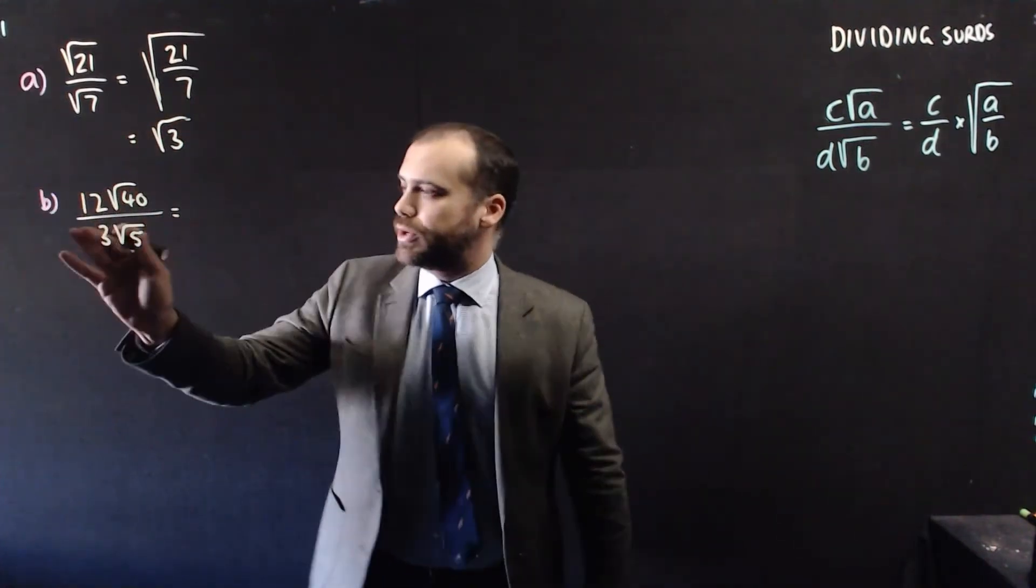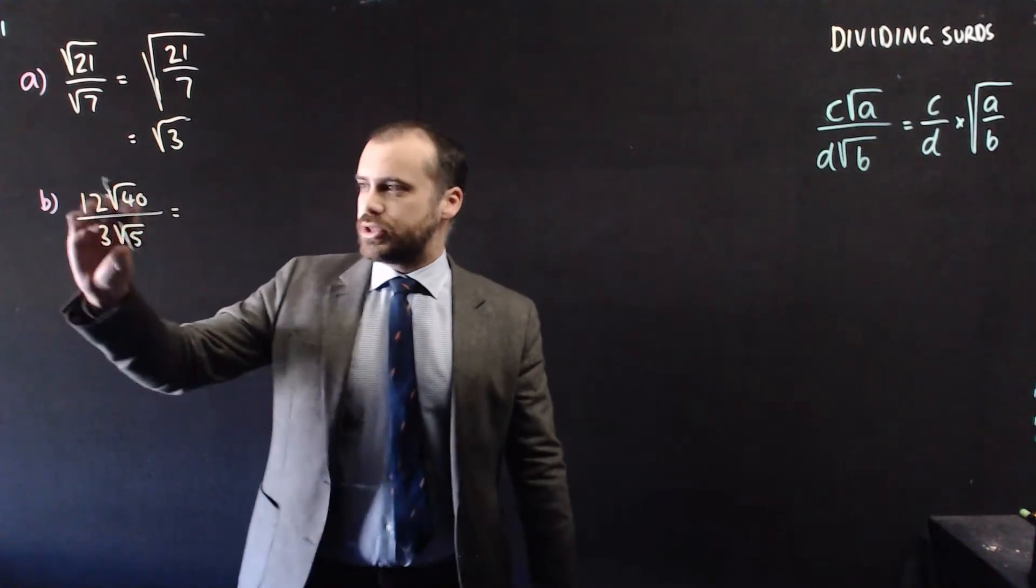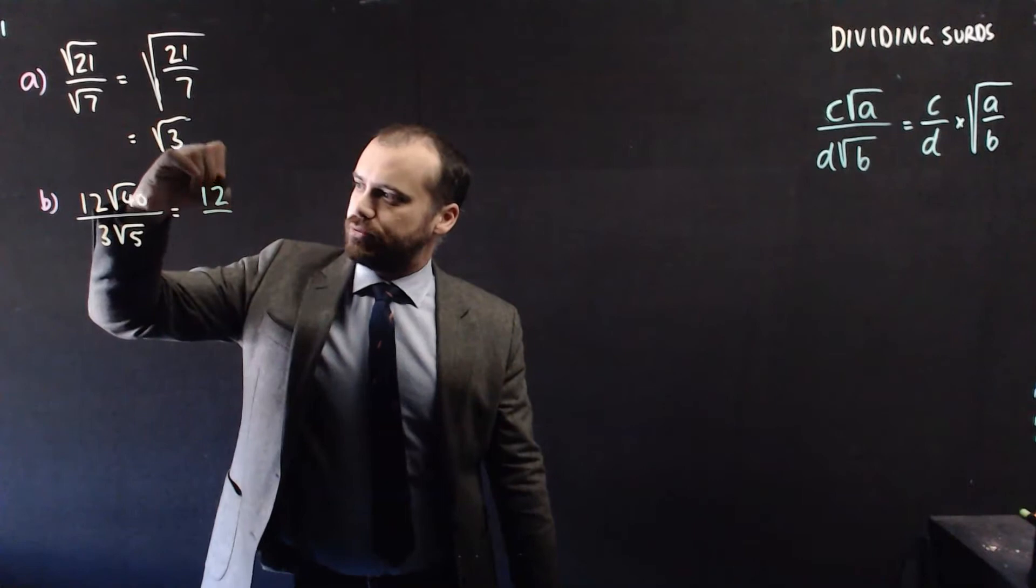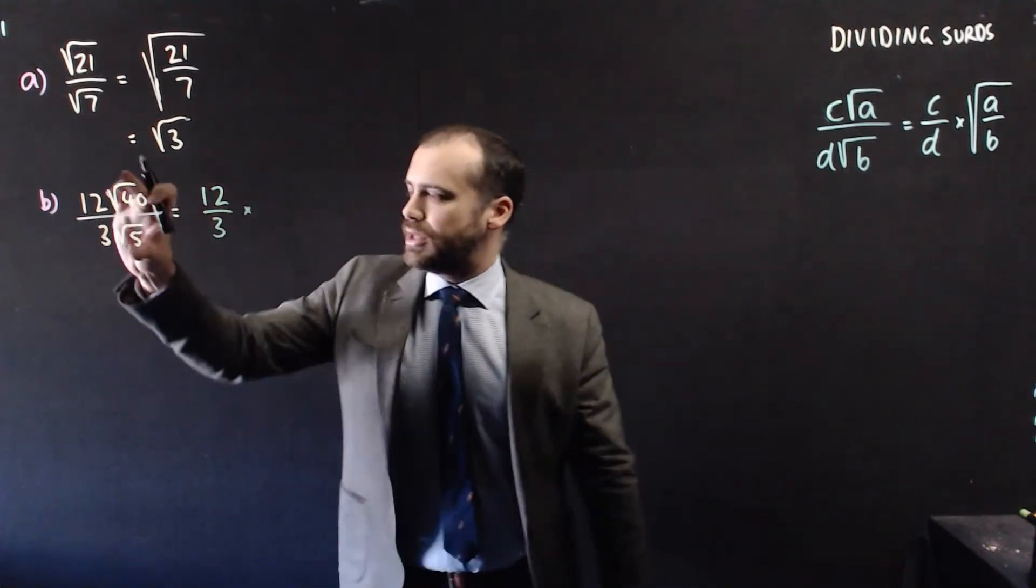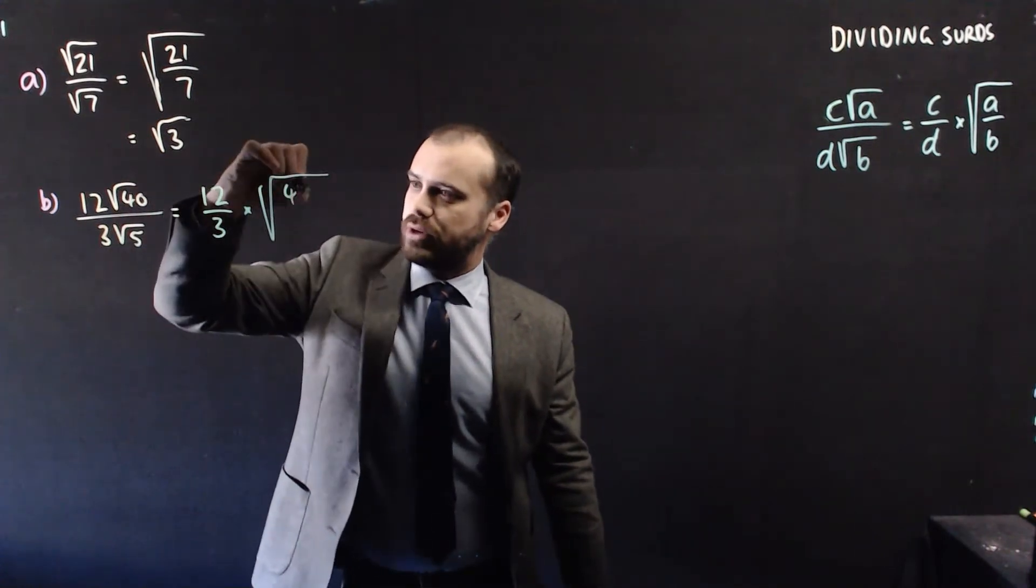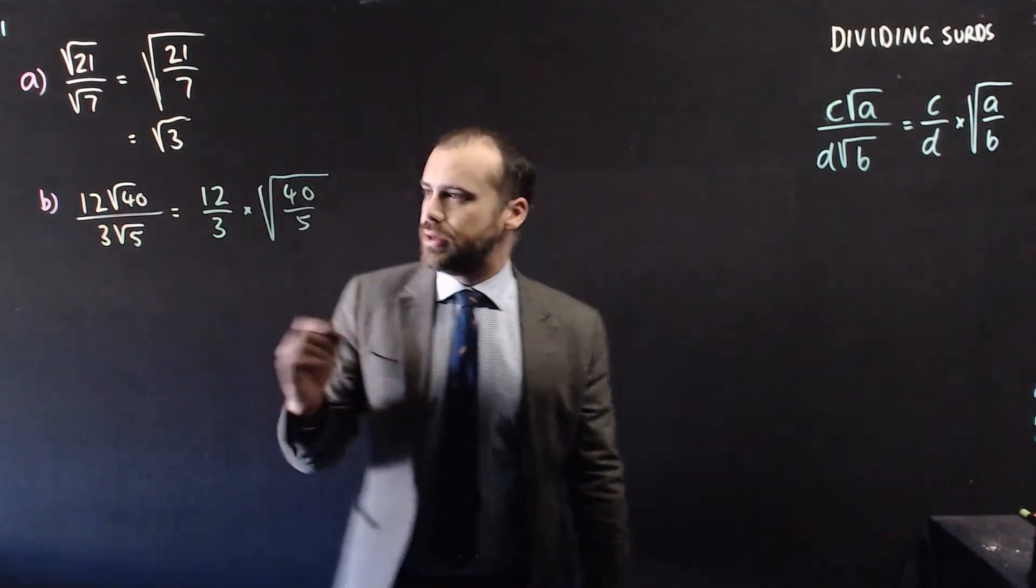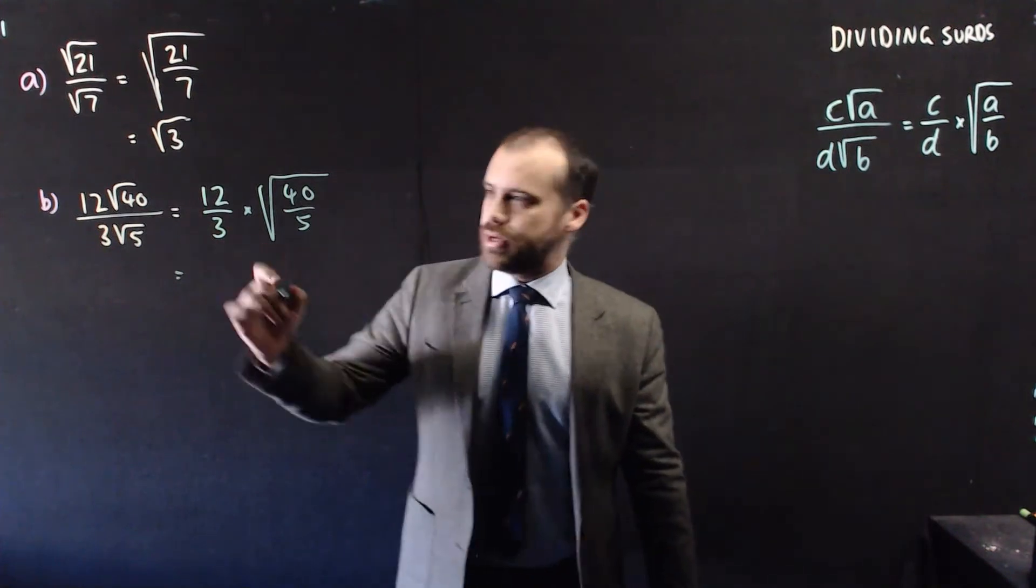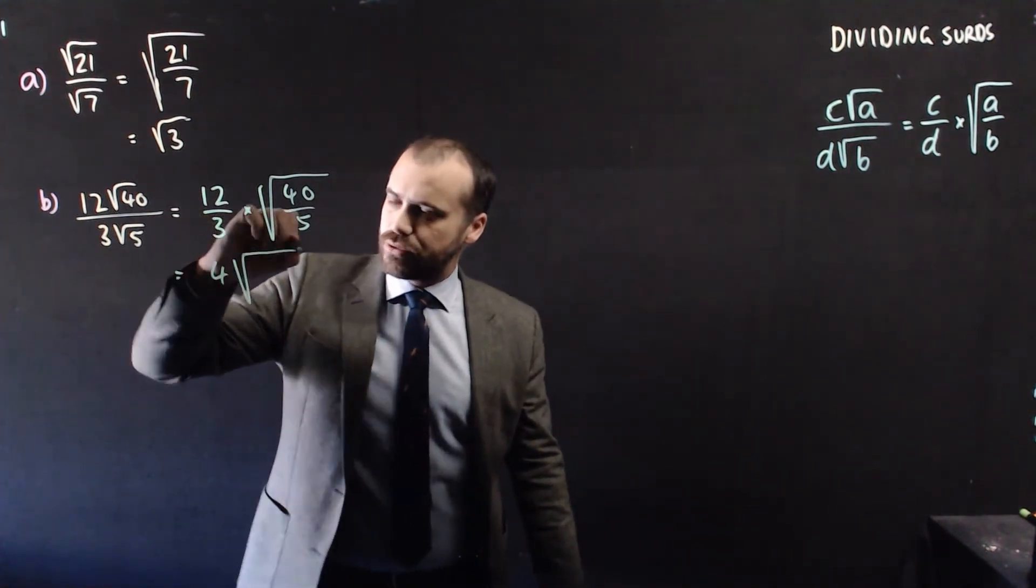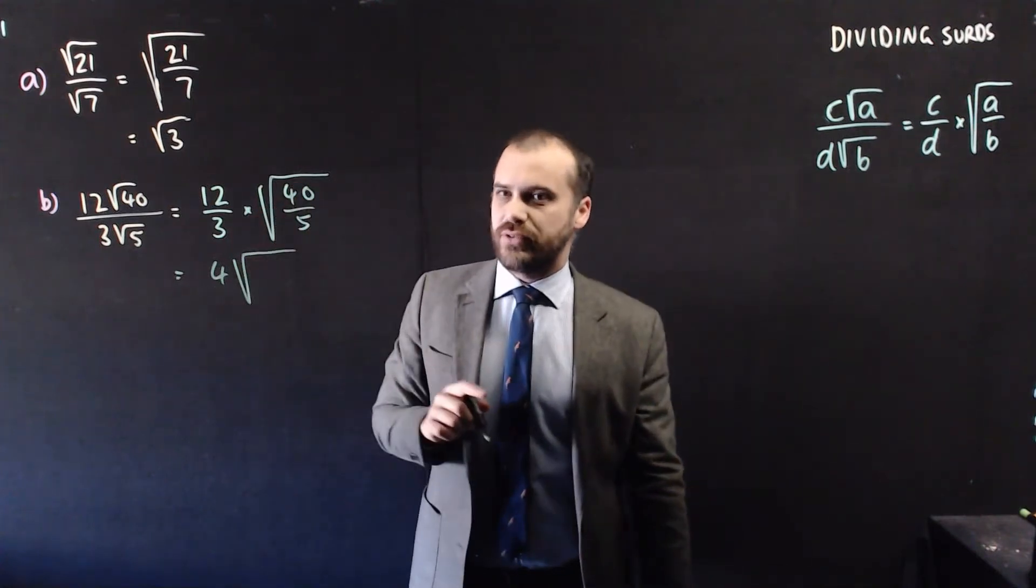So next one, 12 root 40 over 3 root 5. We're going to take these numbers and divide them by each other first. 12 divided by 3, and then we have this as a single square root, 40 divided by 5.